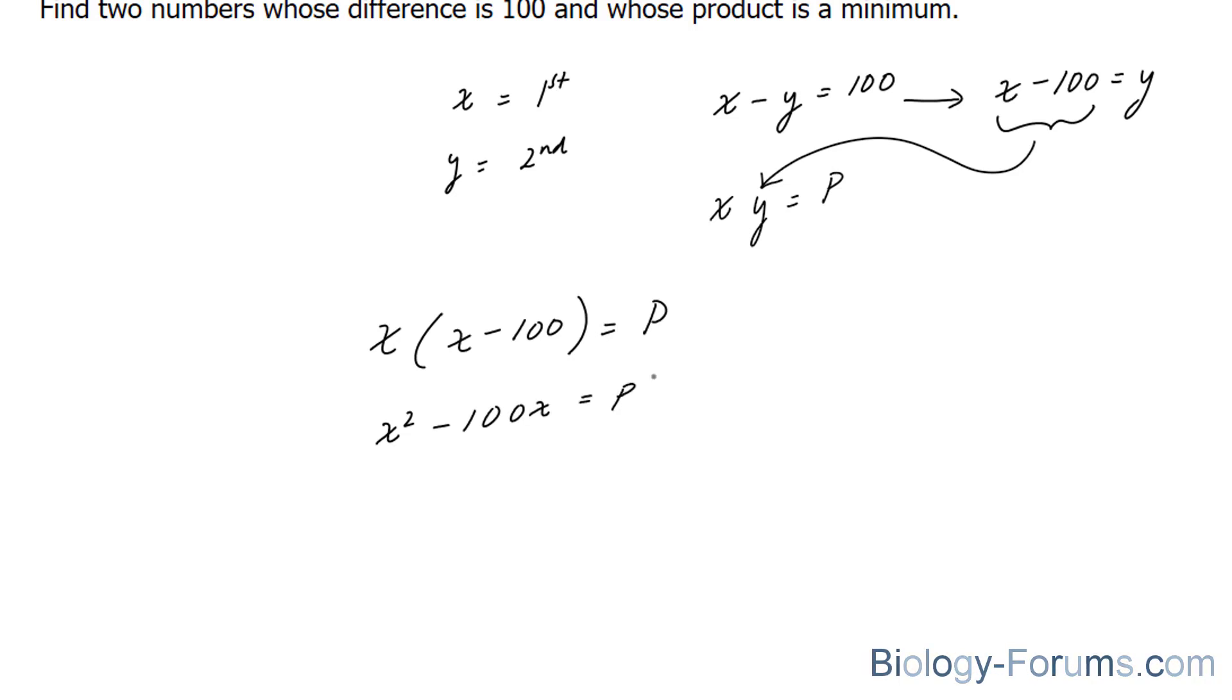So now that you've combined the two equations that you found, you want to find the critical numbers. And the critical numbers are found by first finding the derivative of the function and then setting that derivative equal to 0. By setting it equal to 0, you could solve for your x.